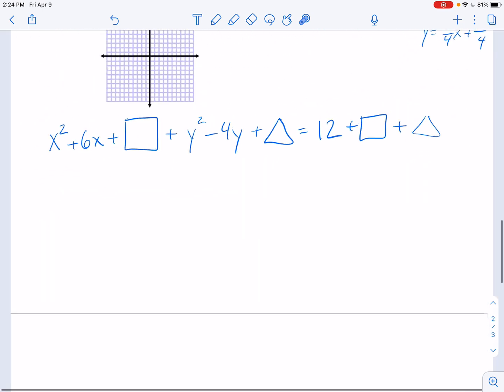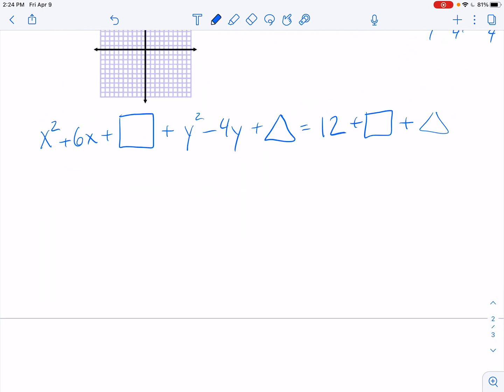Let's finish. So this becomes x plus 3. Half of 6 is 3. 3 squared gives me a 9 in my box. Plus y minus 2 squared. 2 squared is 4 is in my triangle. So now I'm at 13 plus 12 is 25. So we have a circle with center at negative 3 positive 2, and its radius is 5.